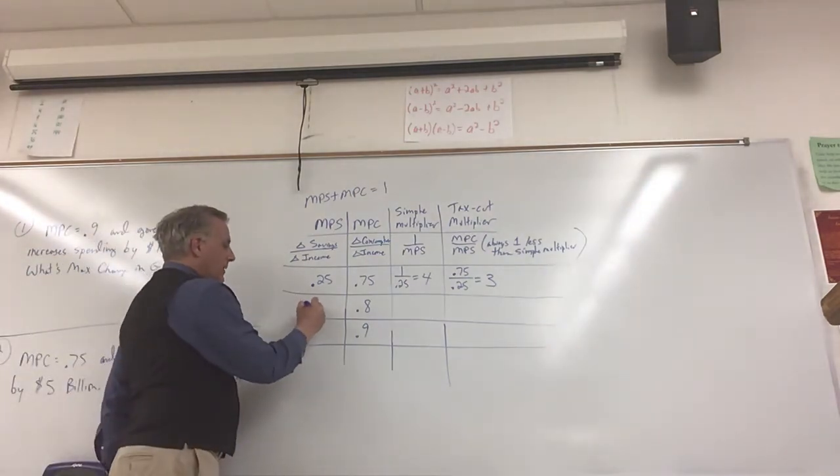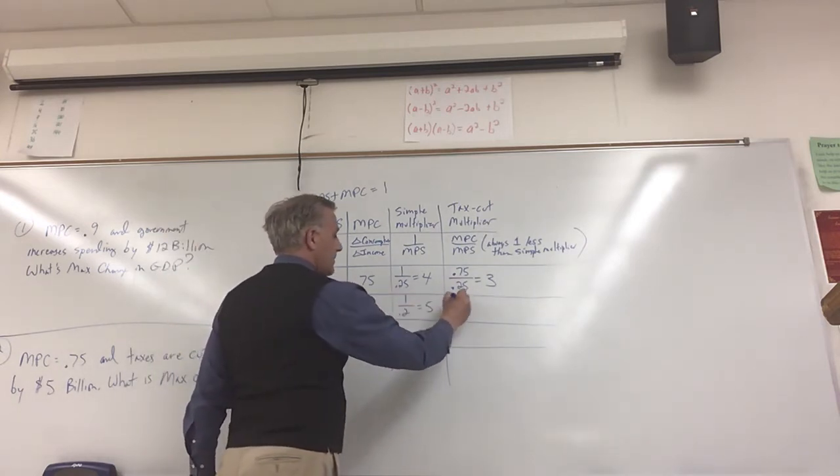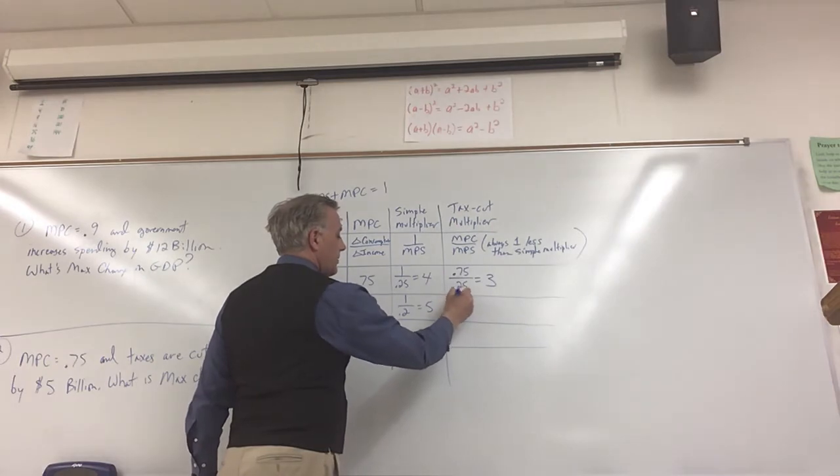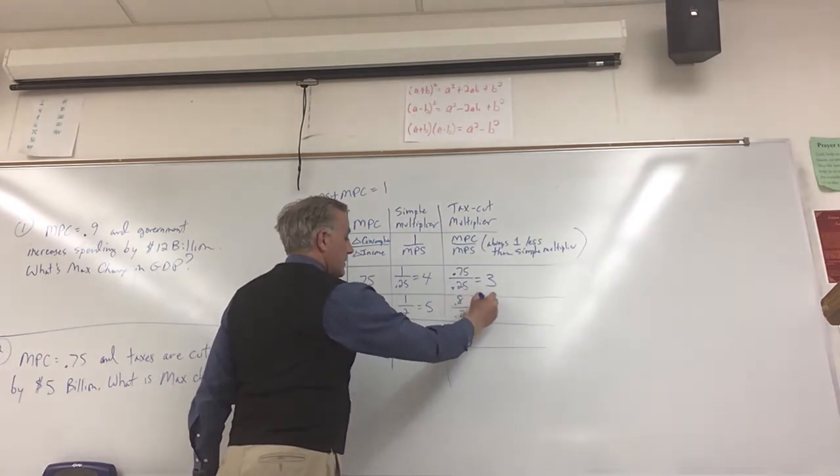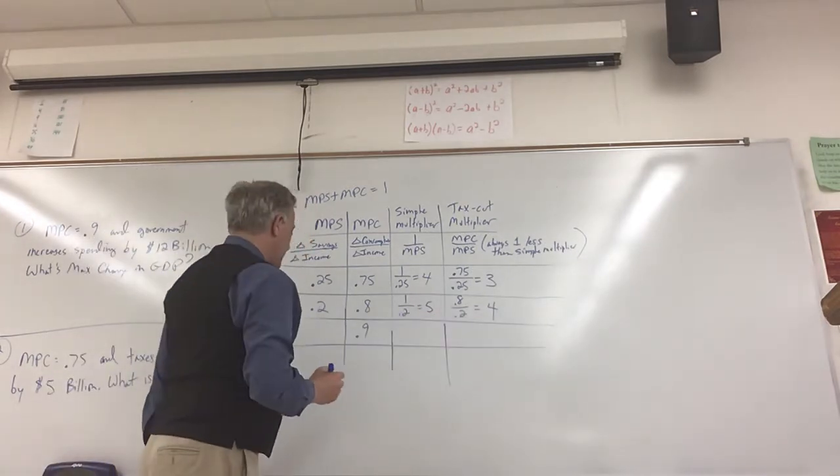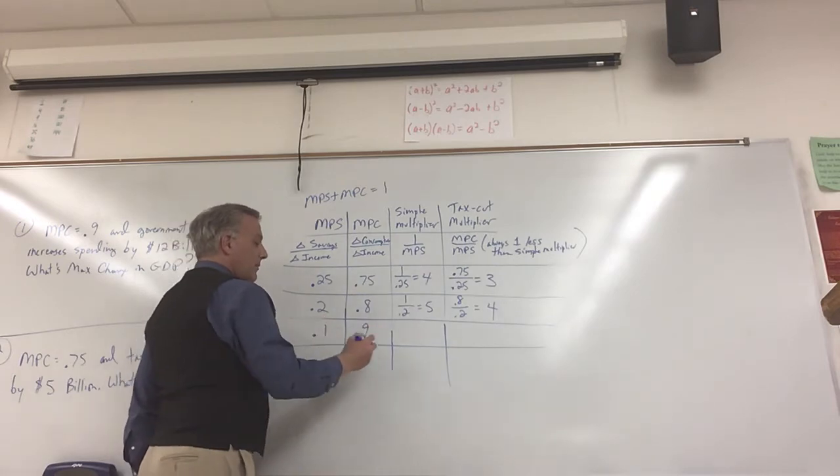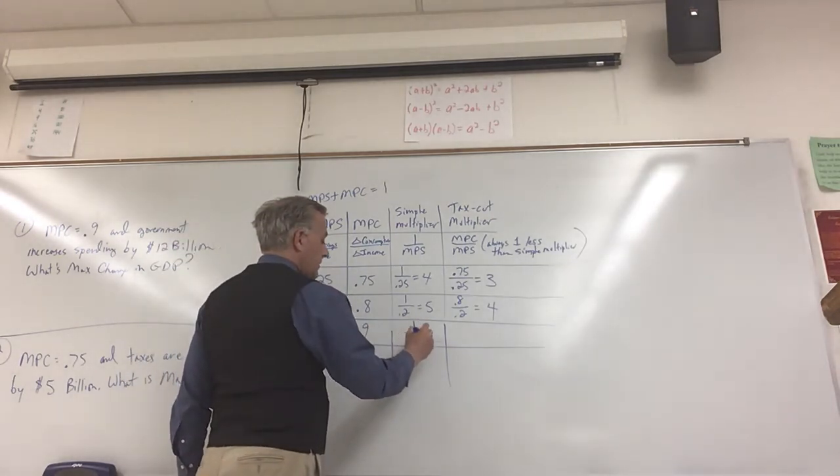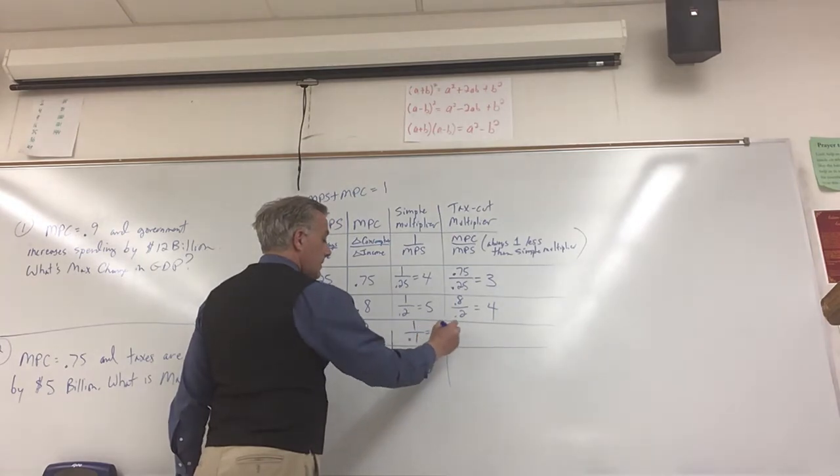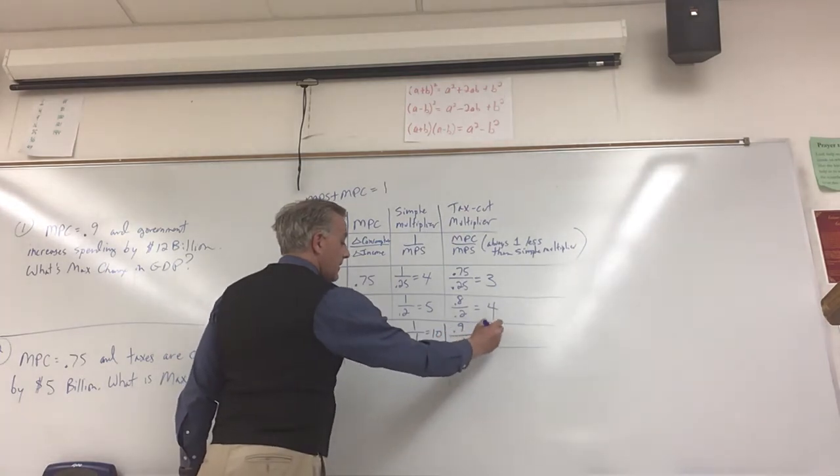Over here, I've got 0.2 in combination with 0.8. Here, 1 over 0.2 equals 5. Here, 0.8 over 0.2, that equals 4. Note, again, that's one less here. And then here, if my MPC is 0.9, this is 0.1. This is 1 over 0.1, which is 10. Predicting into the future, if this is 10, this is probably 9. 0.9 over 0.1 equals 9.